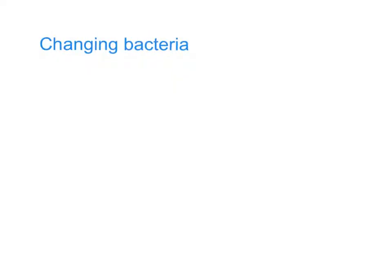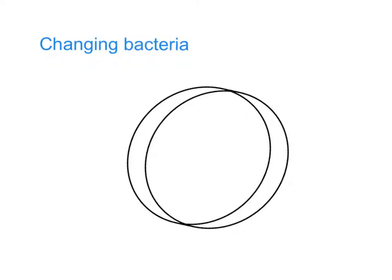Welcome to this presentation on the way that bacteria change through the process of mutation and natural selection, and the effects that this can have on our health. This shape here represents a petri dish in the lab, but equally it might represent the human body. Imagine a bacterium invades the body, or the petri dish.